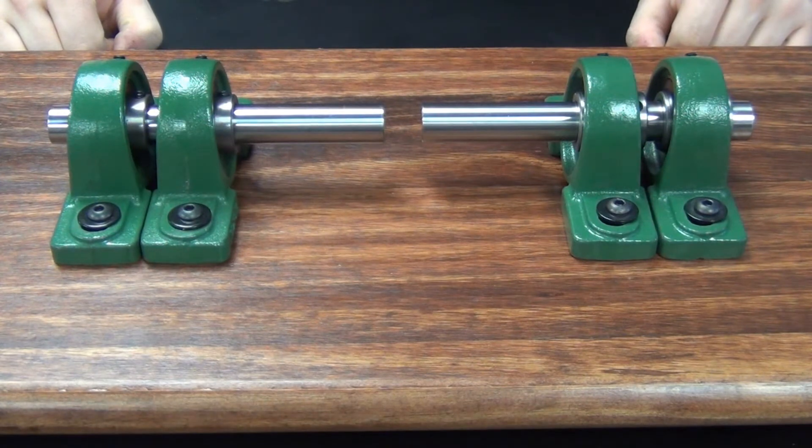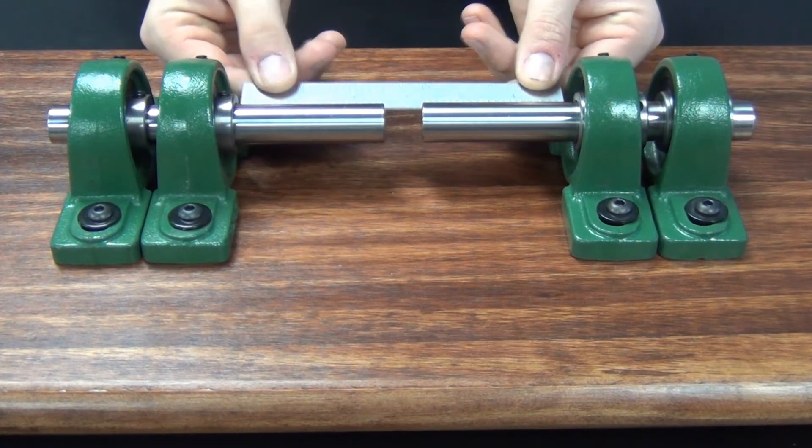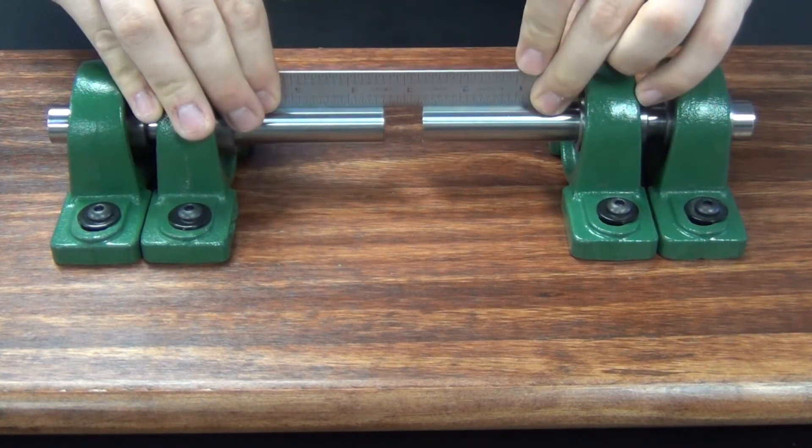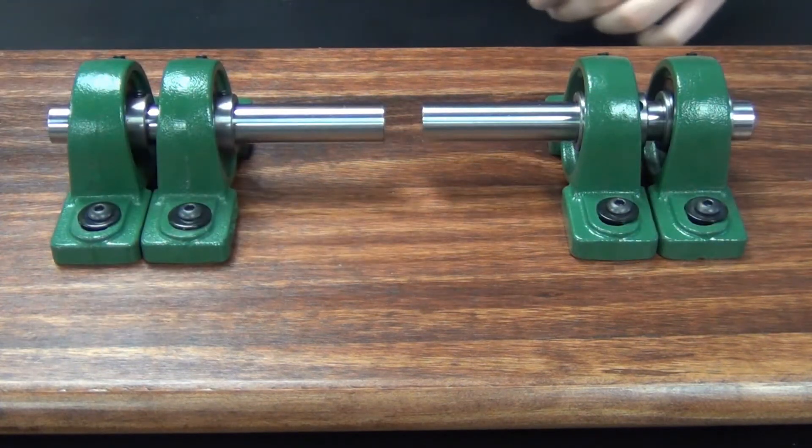We are ready to begin. First, make sure the shaft misalignment is within the couplings ratings. Complete misalignment information is available on Rulon.com. Please note that exceeding the couplings ratings will cause the stainless steel bellows to deform and ultimately fail.